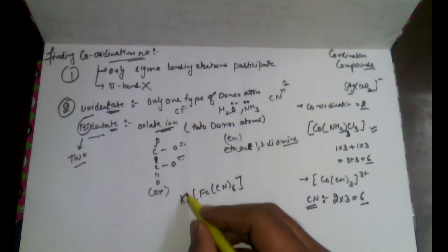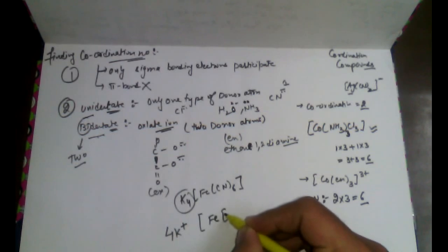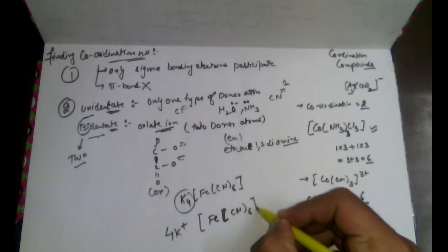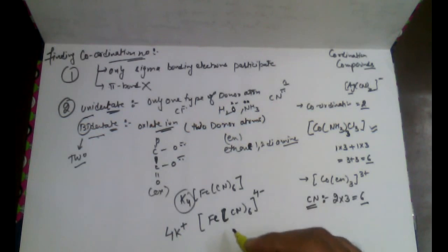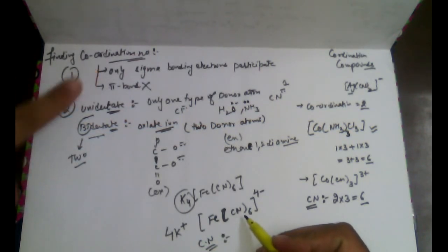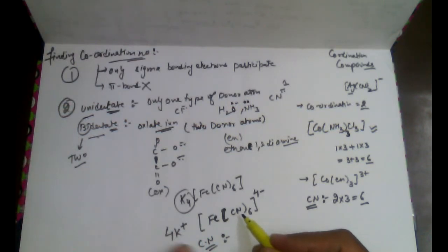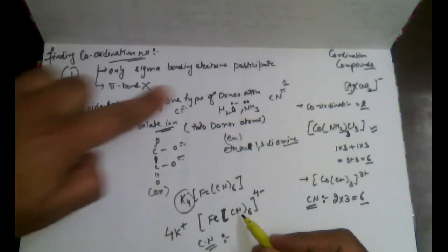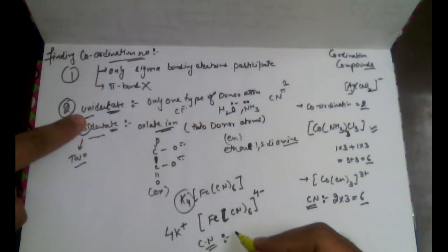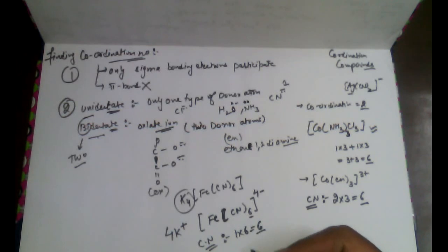Another example for your convenience: consider a compound that when dissolved forms ions, and the complex is in the form of 4 minus. We need to calculate the coordination number, so we check whether the ligand is unidentate, bidentate, or polydentate. CN (cyanide) is a part of unidentate, so 1 multiplied by 6 equals 6. We can say 6 is the coordination number of this molecule.